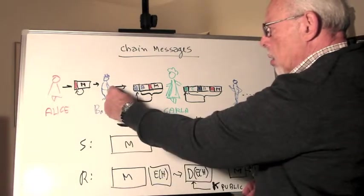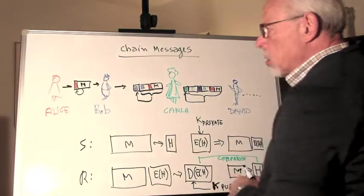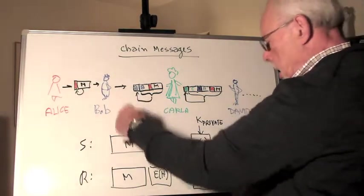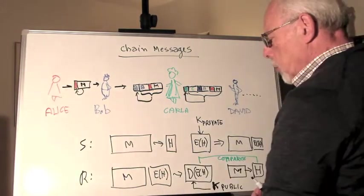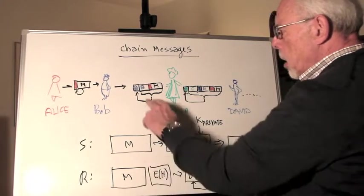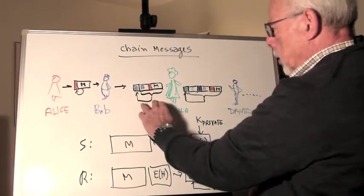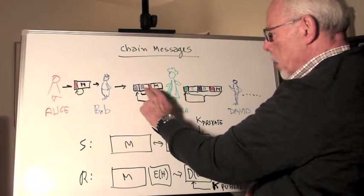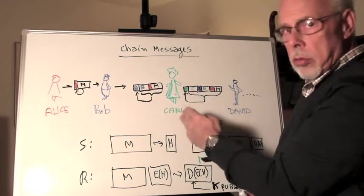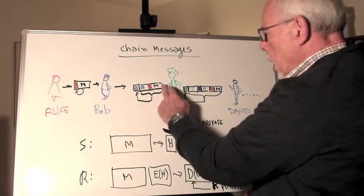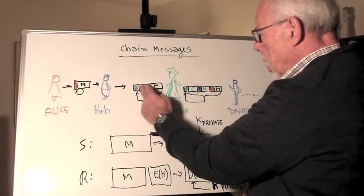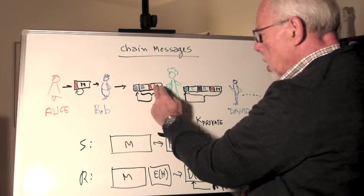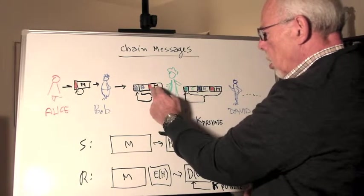Bob can verify that Alice sent it to him because he does what we described right here. So what Bob does, Bob adds his comments to what Alice wrote, to the message. And then takes the entire package, which is Alice's message, her hash, and his comments.